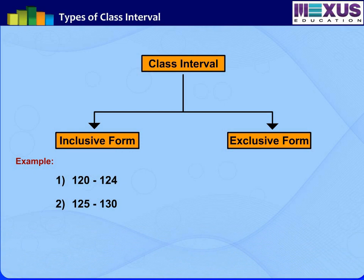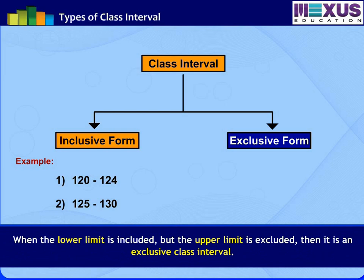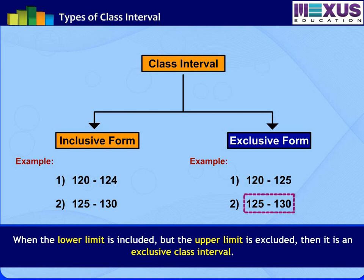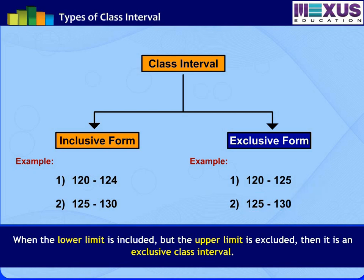Now let us understand the second type, that is exclusive form. When the lower limit is included but the upper limit is excluded, then it is an exclusive class interval. For example, in the first class 120 to 125, 120 is included while 125 is excluded while grouping. Then in 125 to 130, 125 is included and 130 is excluded. This type of interval is the exclusive type of class intervals.